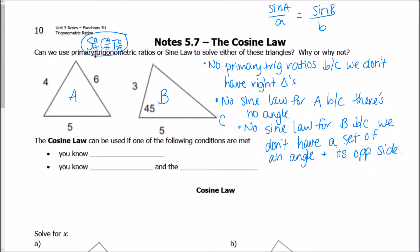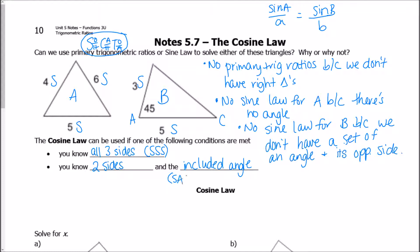Since we can't use SOH-CAH-TOA and we can't use the sine law, the only thing left for these two triangles is the cosine law. In Triangle A, I'm given a side, another side, and a third side — so the cosine law can be used when you know all three sides, called side-side-side (SSS). In Triangle B, I'm given a side, an angle, and a side, where the angle is the included angle between the two sides. You can also use the cosine law if you know two sides and the included angle — called side-angle-side (SAS).